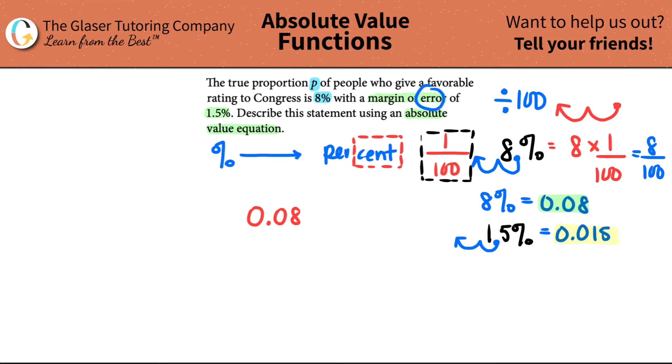So if the error was an increase, right, if the error was too high, that means that it would be the 0.08 plus the 0.015. And if the error was decrease in favor, it would be 0.08 minus 0.015, because they didn't specifically tell us that the error was an overshoot or an undershoot. They just said that there was an error.